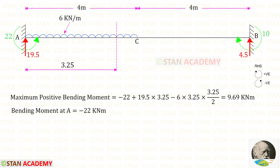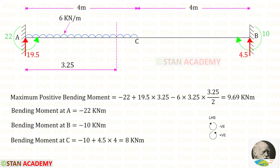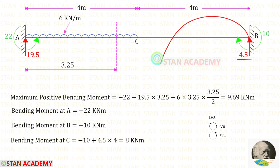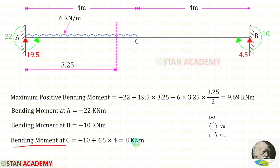Now let us find the bending moment at point A. At point A we have MA acting in the anticlockwise direction so it is negative, giving −22 kNm. At point B we have MB acting in the clockwise direction so it is negative, giving −10 kNm. To find the bending moment at point C, RB acts anticlockwise so it is positive at distance 4: 4.5 × 4. Finally, the bending moment at C is 8 kNm.